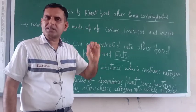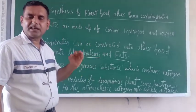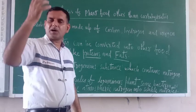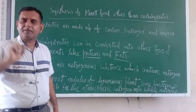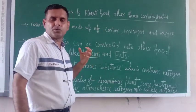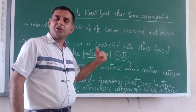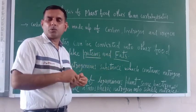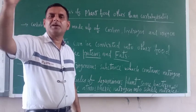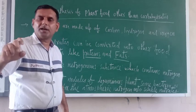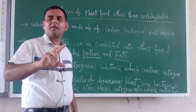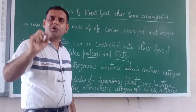In those root nodules some bacteria are found. These bacteria are called nitrogen-fixing bacteria. They absorb atmospheric nitrogen — 78% of the atmosphere is nitrogen — and they convert this nitrogen into soluble nitrates. Those nitrates, when fixed in the roots, can be converted into proteins. That is why it is said that pulses contain maximum protein.